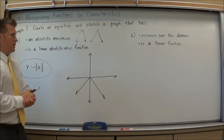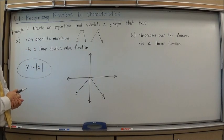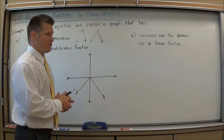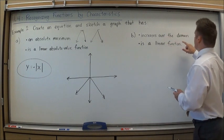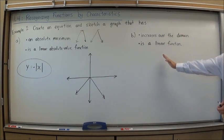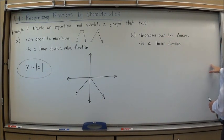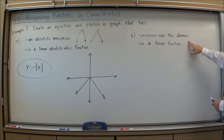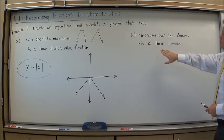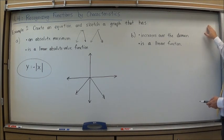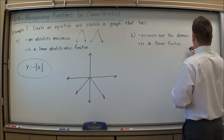And part B, new problem, it says increases over the domain and is a linear function. What does increases over the domain mean? It means as you read it, because we read all of our graphs from left to right, as I move from left to right, the graph should be increasing or going up. So it should be going upwards. Since it's also a linear function, I know it's a straight line. So they're making that actually fairly easy on me here. It's just an upward sloping straight line.